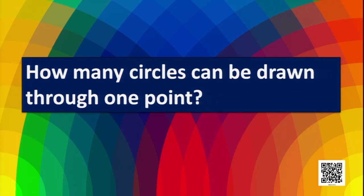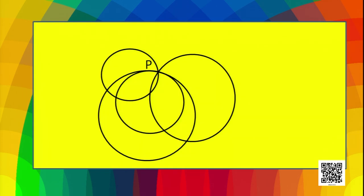Now let's discuss about circles. How many circles can be drawn through one point? Here P is a point and we see that many circles have been drawn through P. So this shows that through one point we can draw many circles.